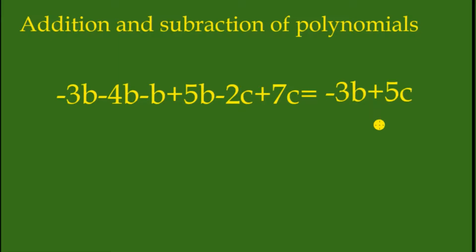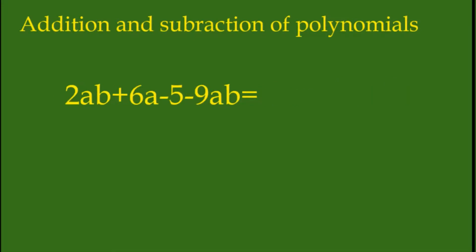This equals positive 5c. So our answer is negative 3b plus 5c. In this example we have 2ab plus 6a minus 5 and negative 9ab.